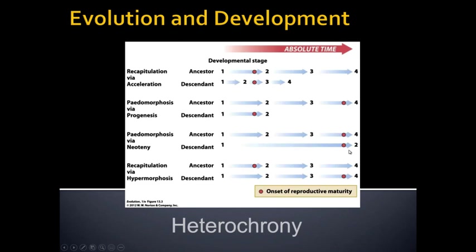There are also types where we elongate a process, and one where organisms mature at a much earlier stage than they otherwise would. All of these heterochronic events are really just mutations, and they can be rather simple mutations. If we have a change at the right genetic location, it can result in a dramatic change in development. This is key for these homeotic mutations.